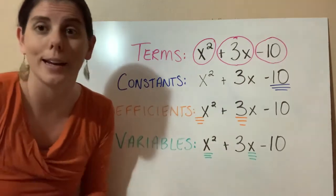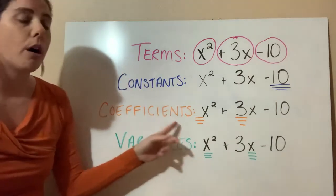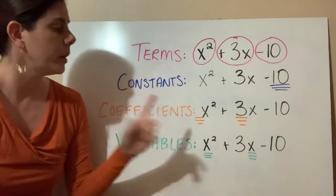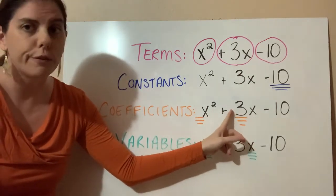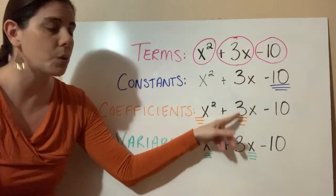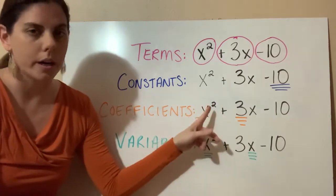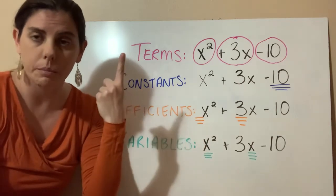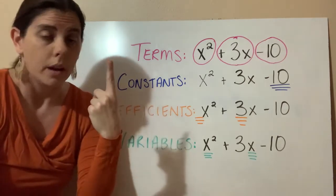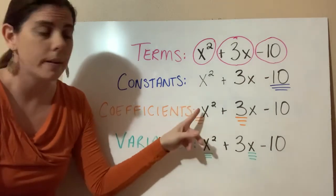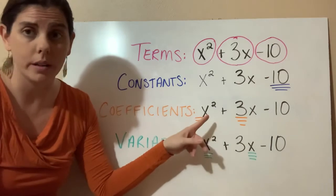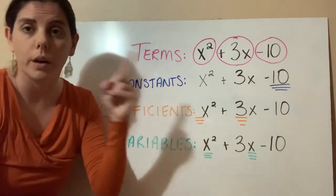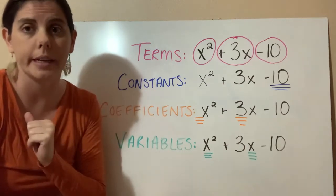A coefficient is the number that comes before a variable. So when we look at these x's, the number that comes before is called the coefficient — so this 3 is the coefficient. When we look at x squared, I went ahead and underlined something but there's nothing there. So the coefficient of x squared is going to be 1, because our identity property is 1. It's assumed the coefficient here is 1, because anytime you see a letter without a number in front of it, we assume the coefficient is 1 — that's the identity property of multiplication.